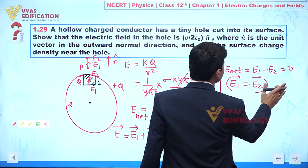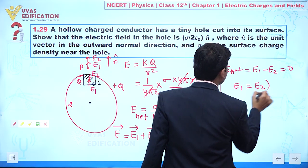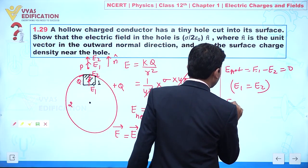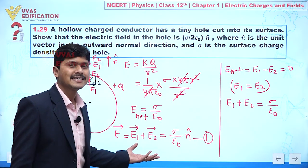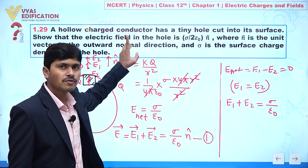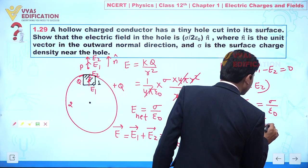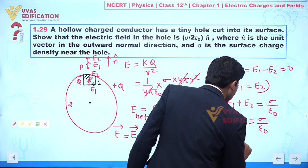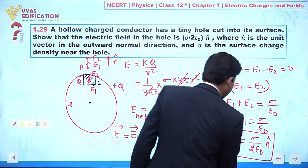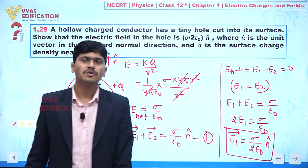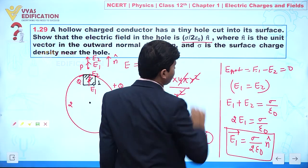Since E1 = E2 in magnitude (directions are opposite inside), substituting into E1 + E2 = σ/ε₀ gives 2E1 = σ/ε₀, so E1 = σ/(2ε₀). In vector form, writing the outward unit normal n̂, we get E1 = σ/(2ε₀) n̂. This is the answer and the proof of the question.